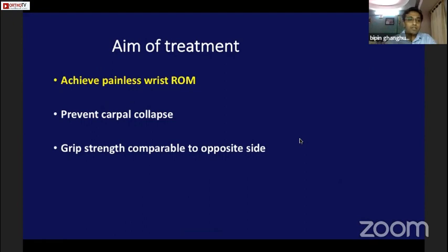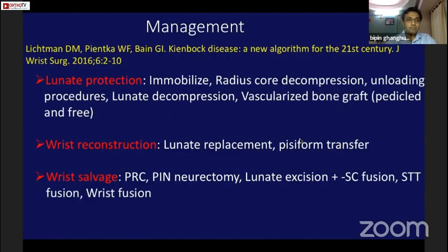The aim of treatment is to achieve painless wrist movement, prevent carpal collapse, and achieve grip strength comparable to the opposite side. In 2016, Lichtman proposed a protocol dividing treatment into lunate protection surgeries, wrist reconstruction surgeries, and wrist salvage surgeries.